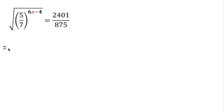First I will write this equation: the square root of (5/7)^(6x-4) equals 2401/875. And this square root means power 1/2.